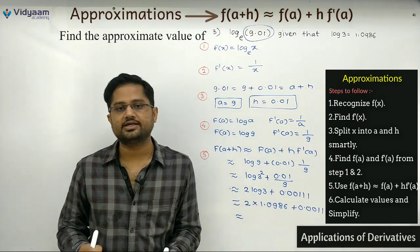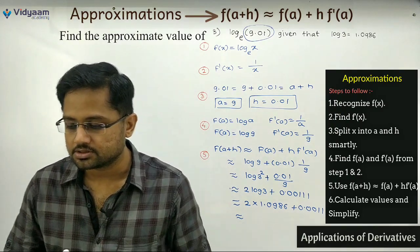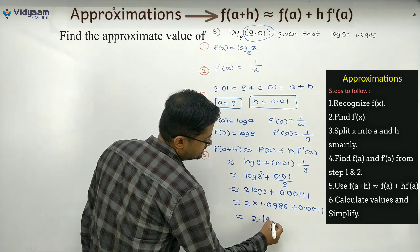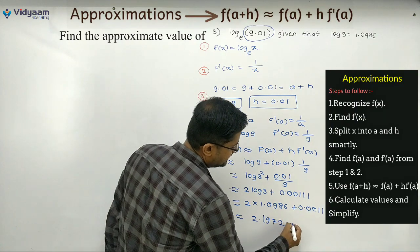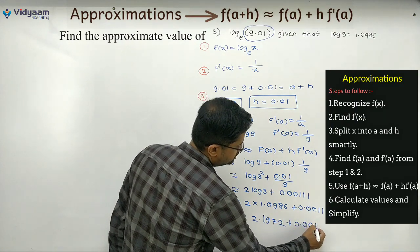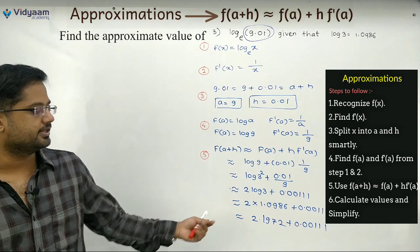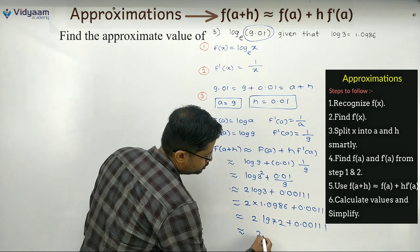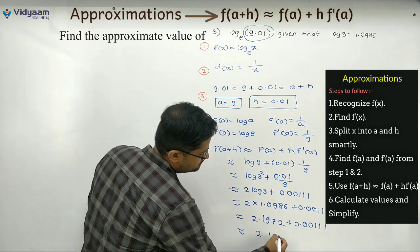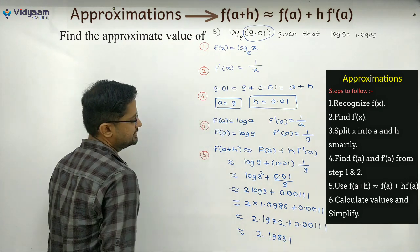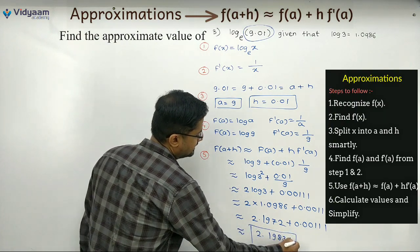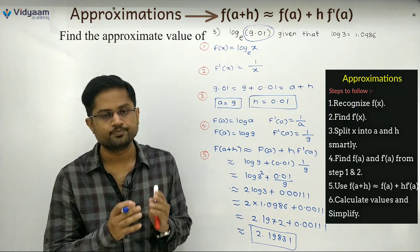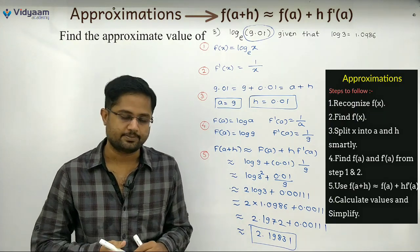So 2 × 1.0986 = 2.1972, plus 0.00111. Adding these gives the answer: approximately 2.1983. That's the approximate value for log base e of 9.01.